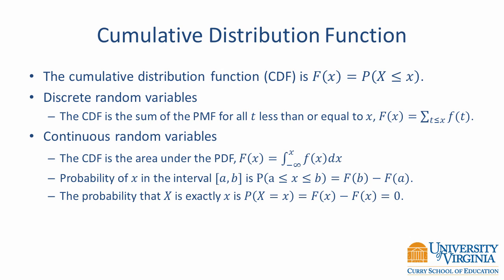The cumulative distribution function is defined as capital F(x), which is equal to the probability that the random variable X is less than or equal to some value x. For a discrete random variable, the CDF is the sum of the probability mass function for all values less than or equal to x. For a continuous random variable, the CDF is the area under the curve from negative infinity to the value of interest. We can use the CDF of a continuous variable to compute the probability that X is in any interval by computing the CDF at the upper bound and subtracting the CDF at the lower bound. This is why the probability that a continuous random variable equals exactly a particular value is 0 — F(x) minus F(x) equals 0.